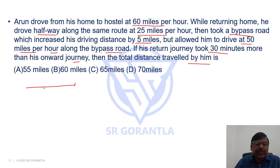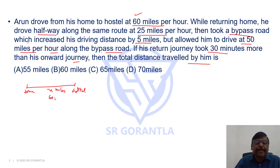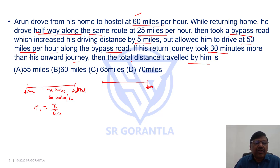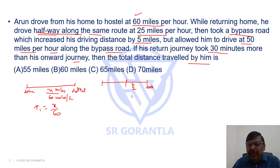Let us assume the distance between his home and hostel is x miles. While going, he travelled at 60 mph, so the time he takes to go from home to hostel will be distance by speed, that is x by 60. While returning from hostel to home along the same route, he travelled halfway — the total distance is x miles, so half the distance will be x by 2 miles — at 25 miles per hour.